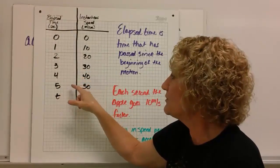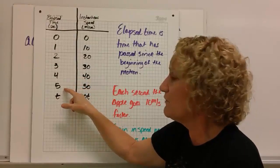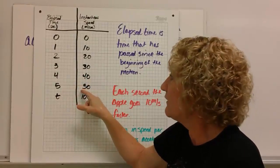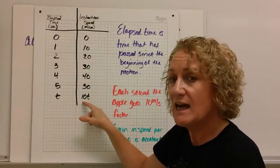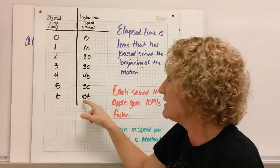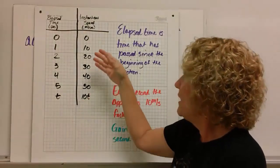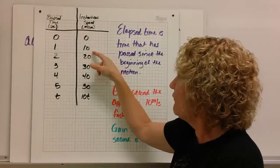After four seconds, 40 meters per second. After five seconds, it's been falling for five seconds now, it's going 50 meters per second. So whatever number we put in for time, 10 times that in terms of seconds is how fast it's going to be going.